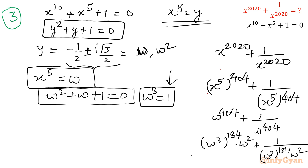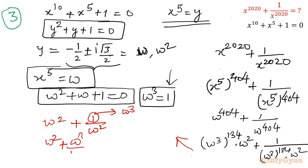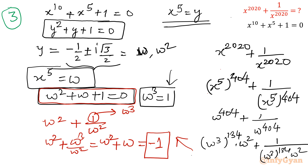Since omega cube equals 1, the expression reduces to omega squared plus 1 over omega squared. Writing 1 as omega cube, the denominator term becomes omega cube over omega squared equals omega. So the expression becomes omega squared plus omega, and from our equation omega squared plus omega equals negative 1. Therefore the answer is negative 1. This is the third approach using complex numbers and the cube root of unity, where the roots are negative one half plus or minus i root 3 over 2.